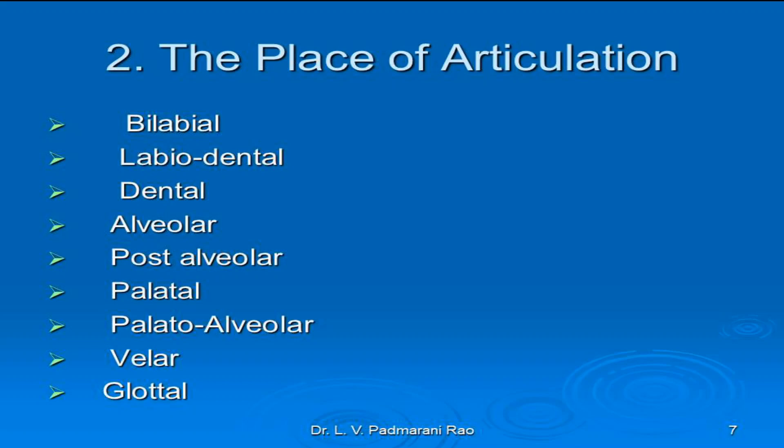The last place of articulation is glottal. Sounds that are produced by obstruction or narrowing between the vocal cords with air passing through the glottis are called glottal sounds. The English sound H, as in 'hat', 'hen', 'house', 'home', etc., is a glottal sound. So the place of articulation gives us: bilabial with two lips, labiodental with lips and teeth, dental with the teeth, alveolar with the teeth ridge, post-alveolar with the posterior portion of the alveolar ridge, palatal with the hard palate, palato-alveolar with the alveolar ridge and hard palate, velar with the soft palate, and glottal with the glottis.